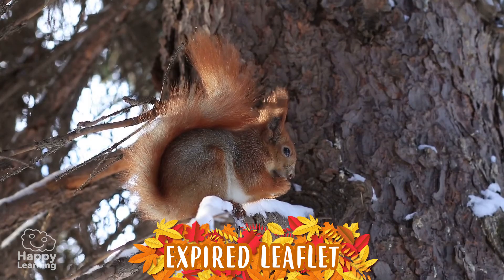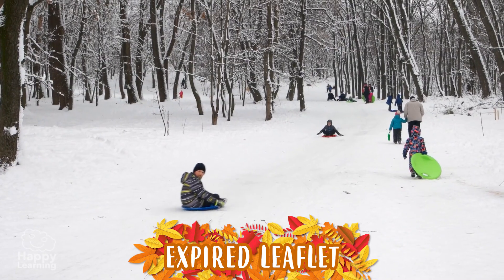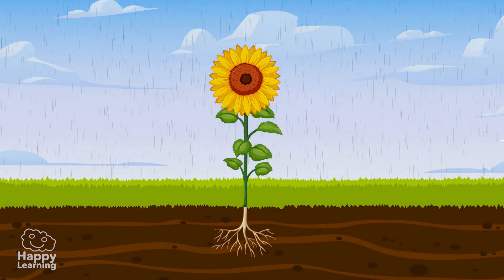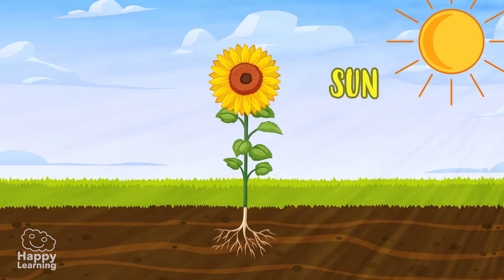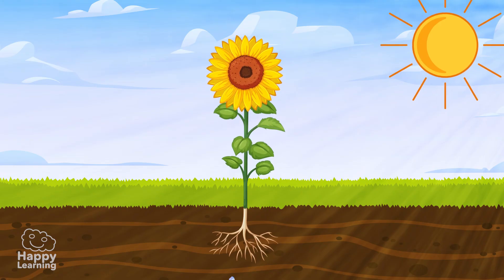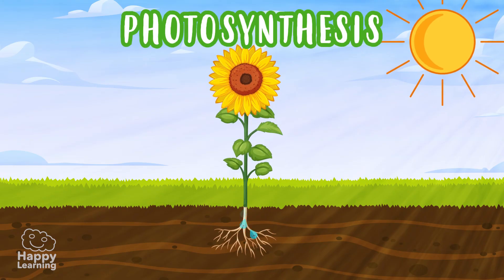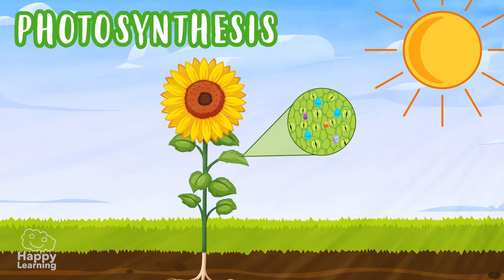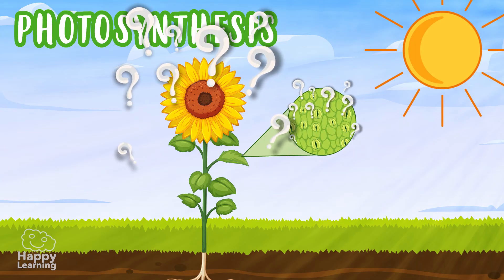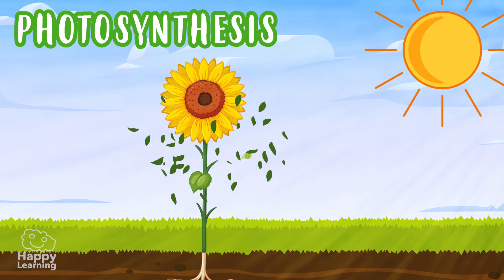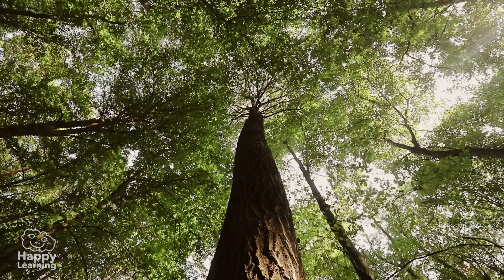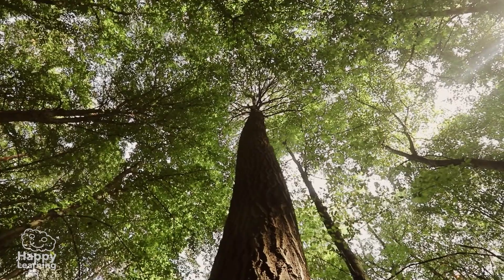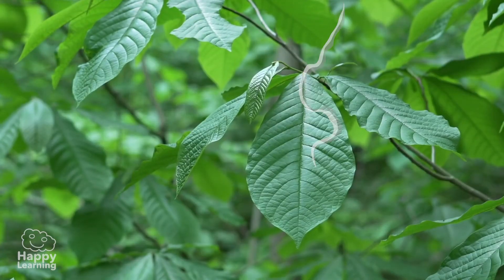We all know that all plants, including trees, need sunlight to live, right? It is how they are able to carry out the process of photosynthesis, which means when they make their own food. And where does this happen? In the leaves! Leaves are the food factories that feed the trees. They are like the kitchen!